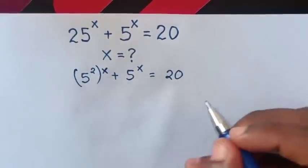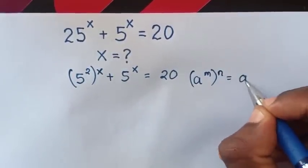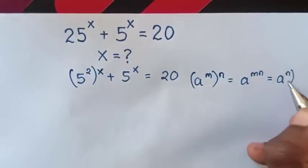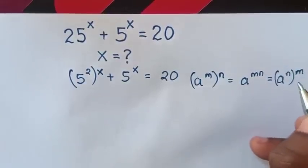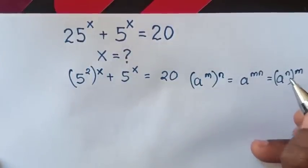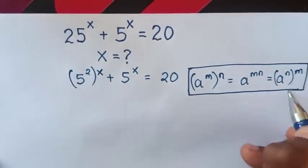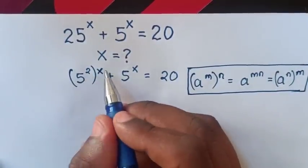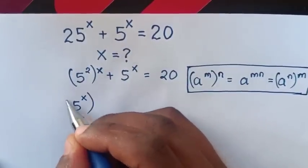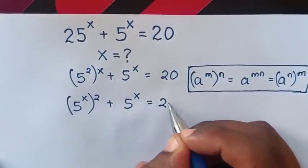We apply the rule which is a power m bracket power n is equal to a power mn, which is equal to a power n bracket power m. So we can exchange the powers — here m is inside the bracket, and here n is inside the bracket. So in our question we exchange the powers, giving us 5 power x bracket power 2 plus 5 power x is equal to 20.